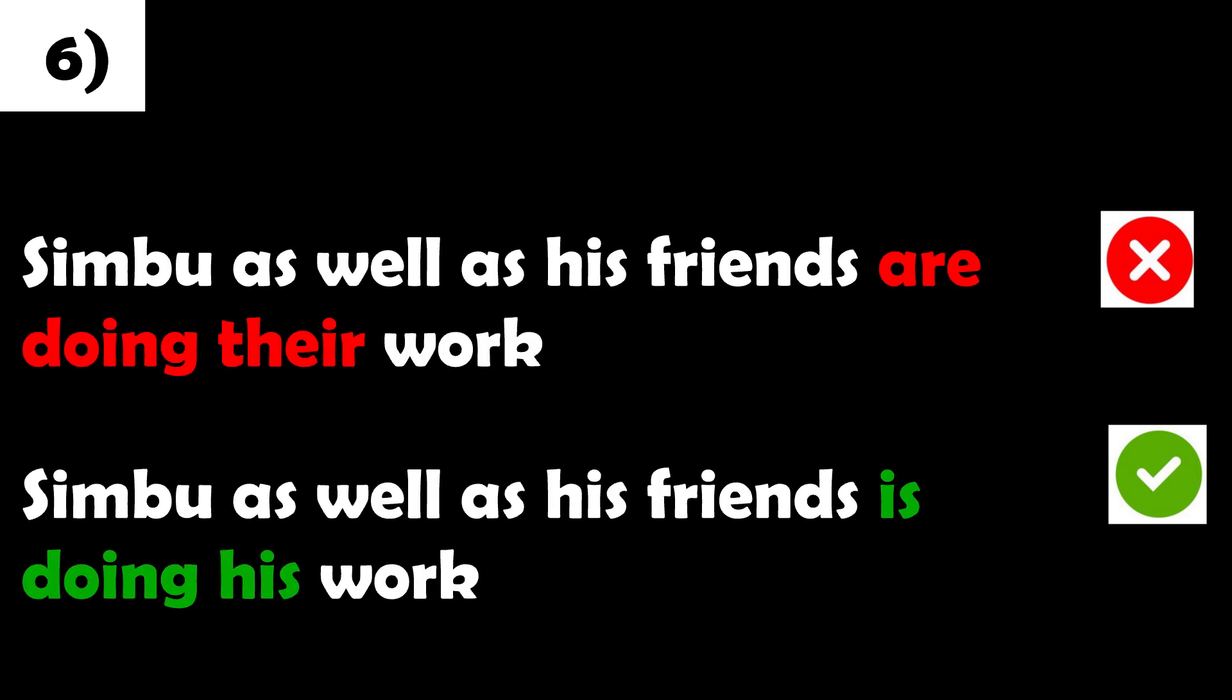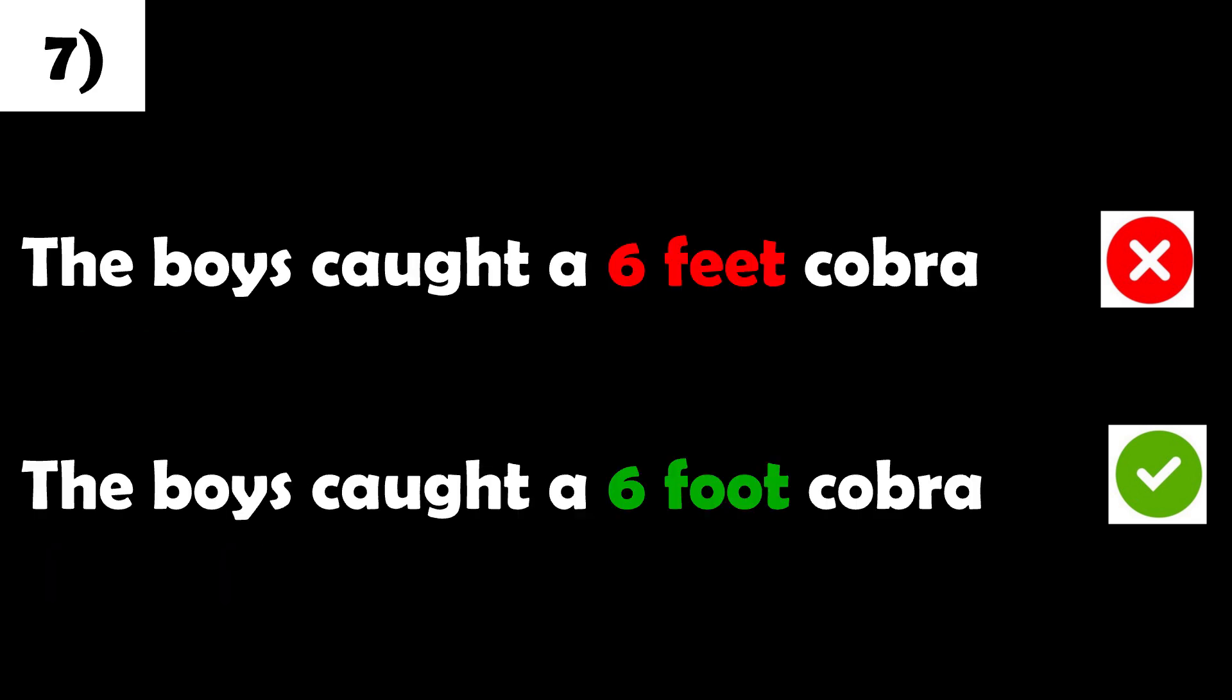Simbu as well as his friends are doing their work. Simbu as well as his friends is doing his work. The boys caught a six feet cobra. The boys caught a six foot cobra.